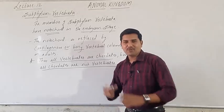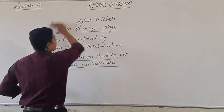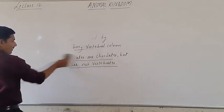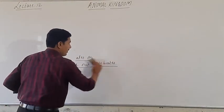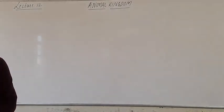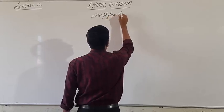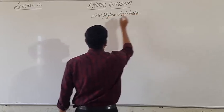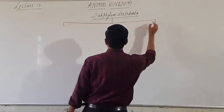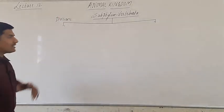This is regarding the introductory part of subphylum Vertebrata. Let us look at its classification. The subphylum Vertebrata is divided into two divisions. The first division is called Agnatha and the second is Gnathostomata.